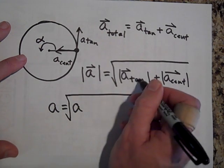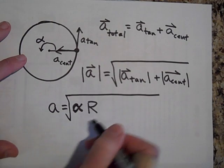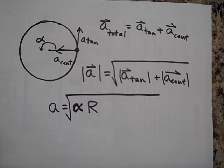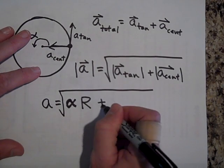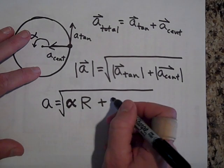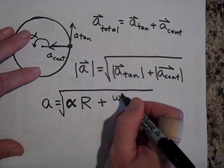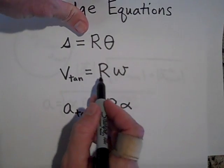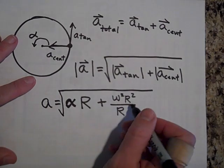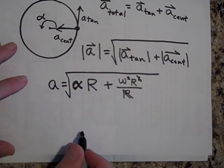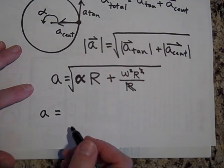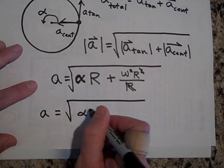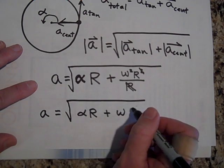In terms of the tangential acceleration, that will be alpha times R. The centripetal acceleration is V squared over R. But V squared, according to omega, is omega squared R squared. So V squared over R gives omega squared R. Since V-tangent is R-omega, we cancel one R from each, and we can say the total acceleration for something going in a circle and speeding up is alpha R for the tangential part plus omega squared R for the centripetal part.